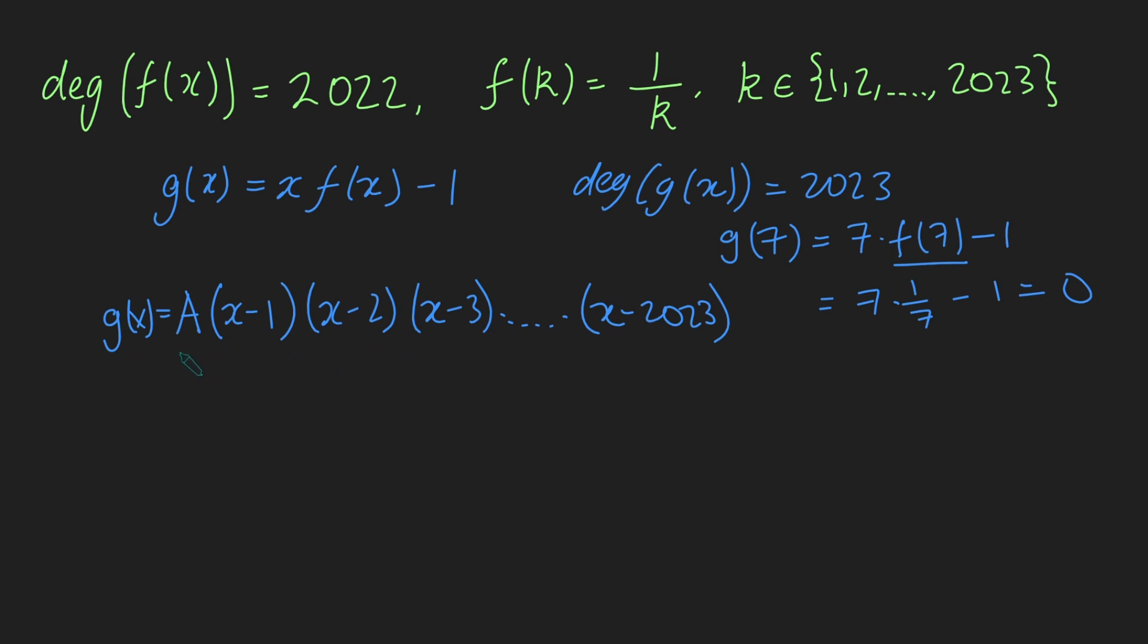And, well, we kind of want to know what this constant a is, and we think about how we can work that out. Well, we can work it out quite easily by just substituting x is 0 up here. If we do that, we get g of 0 is 0 times f of 0. Now, we don't know what f of 0 is, but we do know that 0 times anything must be 0. So, g of 0 must be minus 1. Lovely. Now, what's 0 when I plug it in down here? It's just a multiplied by minus 1 times minus 2 times minus 3 and so on, all the way up to minus 2023. And this is supposed to equal this minus 1 here.